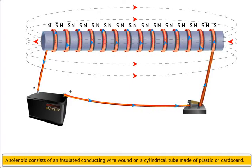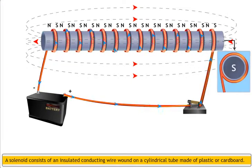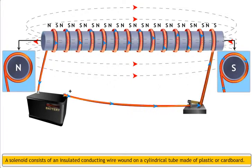Thus, a solenoid consists of a number of tiny magnets of equal strength. All the tiny magnets in the solenoid together behave like a bar magnet. The end of the coil at which the current in the coil is in a clockwise direction develops south polarity, while the other end, where the current in the coil is in a counterclockwise direction, develops north polarity.